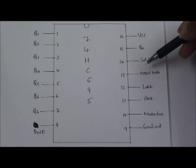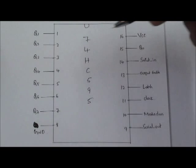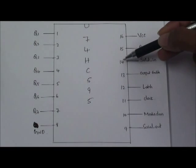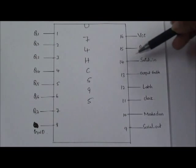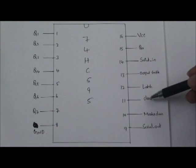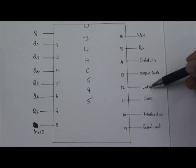Send the byte of data to the 595 shift register through serial input pin, that is at pin number 14. And once the data is sent, then toggle the clock pin, again set the latch pin high.